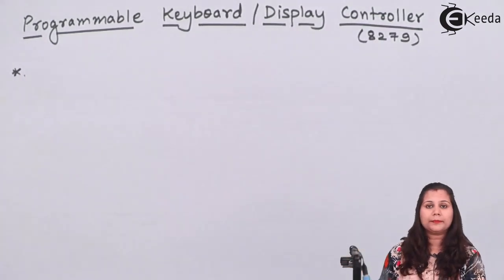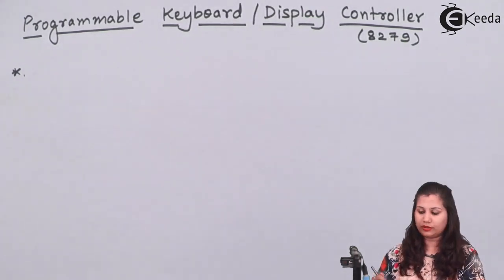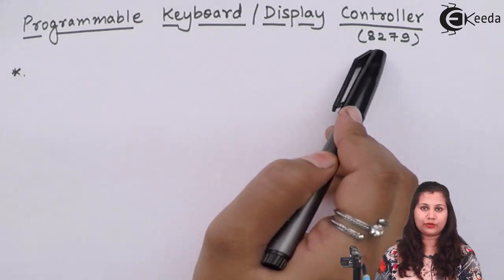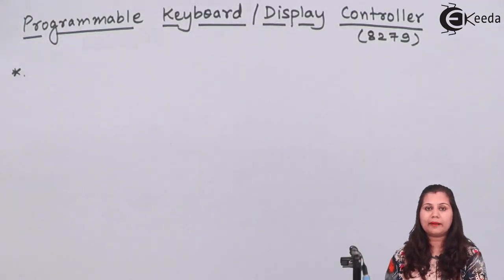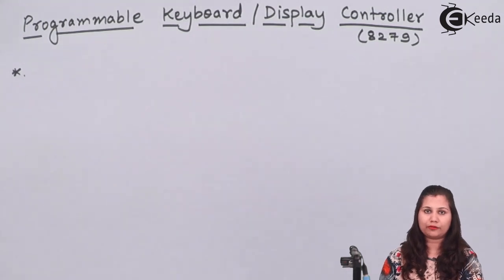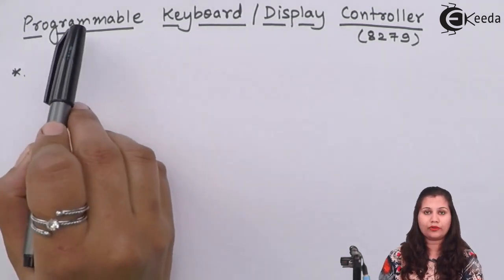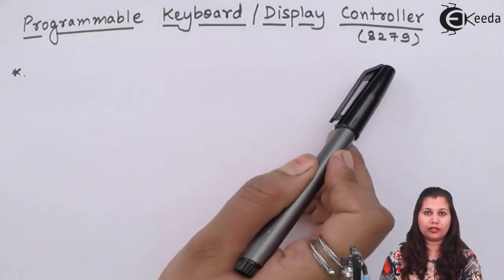The programmable keyboard display controller has IC number 8279. It was designed by Intel to interface the keyboard with the microprocessor. That is why its name is Programmable Keyboard Display Controller.